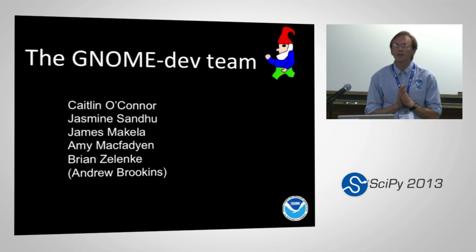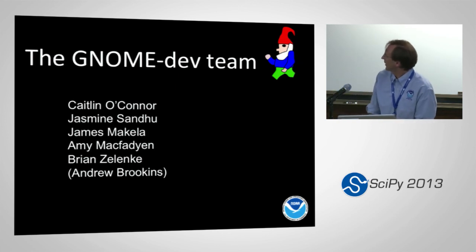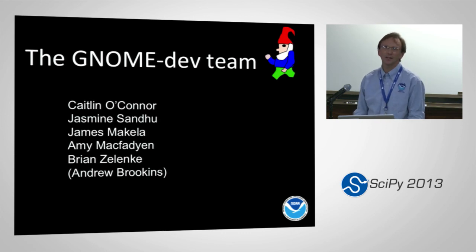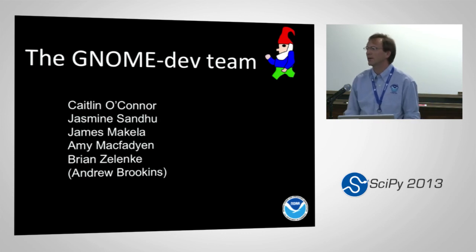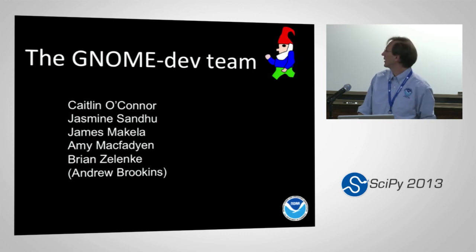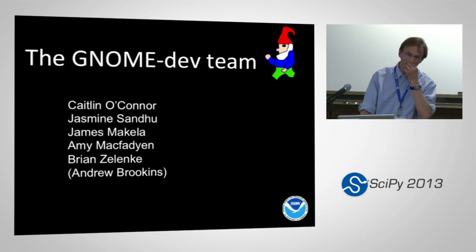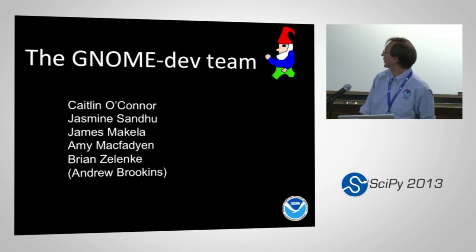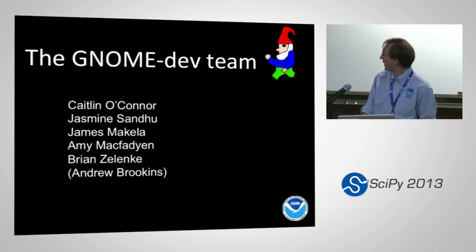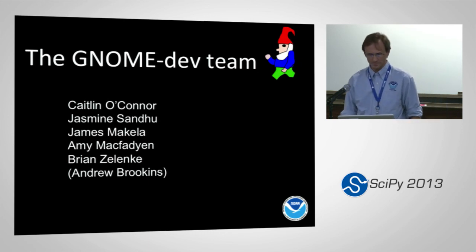The GNOME development team: Caitlin O'Connor has been the primary GNOME developer for the last 14 years and deserves a lot of credit — we're asking her to go from C++ to Python, Cython, and JavaScript, and she's been great. Jasmine Sandu did all the serialization work, which has been wonderful. James McKayla managed our 64-bit port. Amy McFadden and Brian Zelenke are oceanographers in our group who are also getting into the code. And Andrew Brookins wrote almost the entire web app, in parentheses because he's unfortunately just left and moved on to greener pastures.